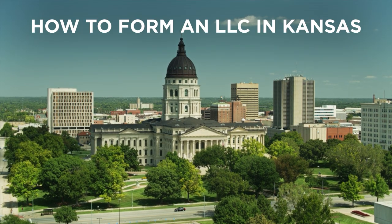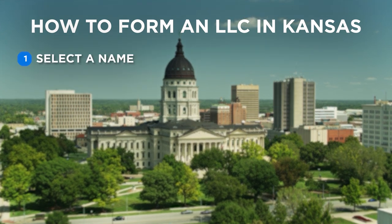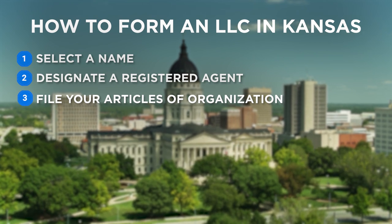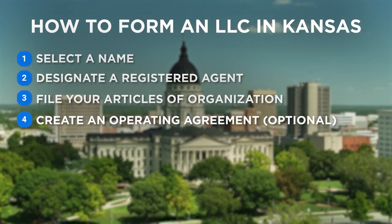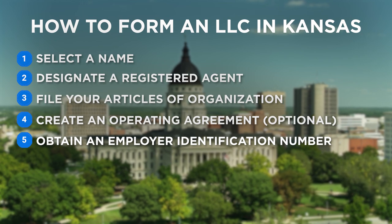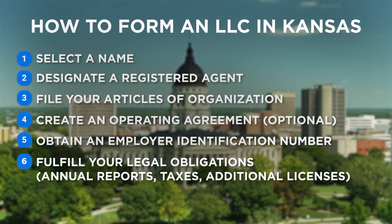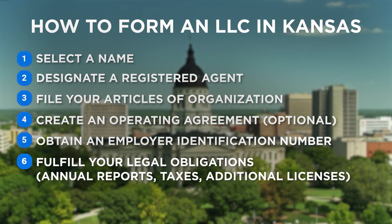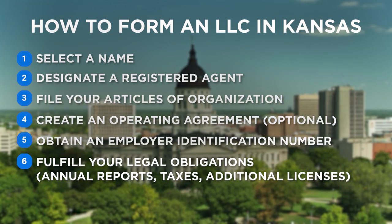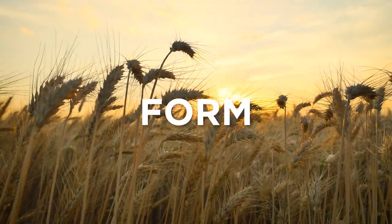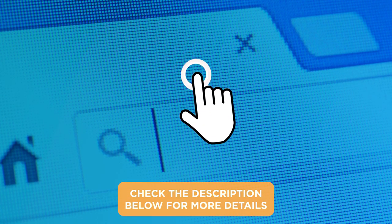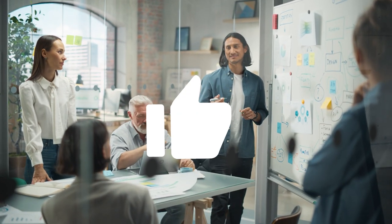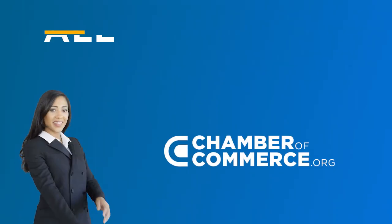To sum it up, how to form an LLC in Kansas: 1. Select a name. 2. Designate a registered agent. 3. File your articles of organization. 4. Create an operating agreement. 5. Obtain an employer identification number. 6. Finally, fulfill your legal obligations, particularly those relating to submitting annual reports, registering for state taxes, and applying for any additional licenses you may need. By following these steps, you can form an LLC in Kansas. All the websites mentioned are in the description below, as well as a link to a guide. Thanks for watching — be sure to check out our other videos answering your questions on all things LLC.